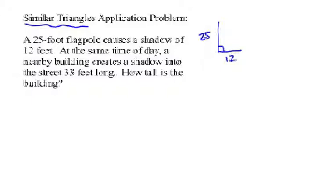And then a nearby building is of an unknown height, right angle to the ground. The shadow is 33 feet long. So, we are going to assume that the sun is at the same angle in the sky, and therefore, we have congruent angles there. And due to AA similarity, we know that the triangles are similar.